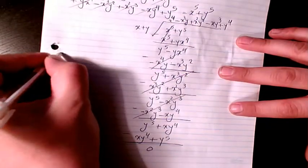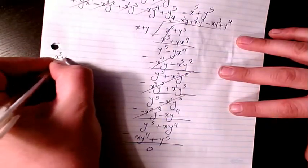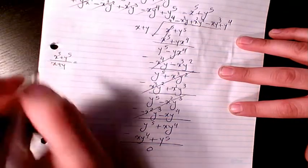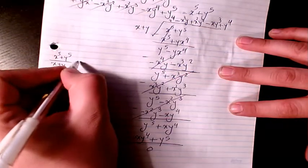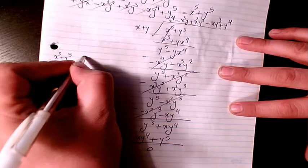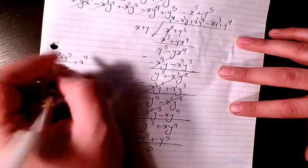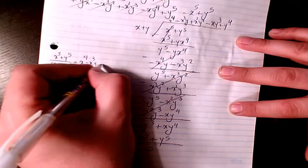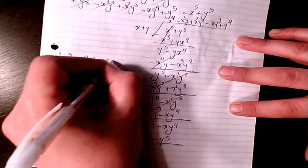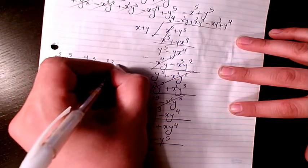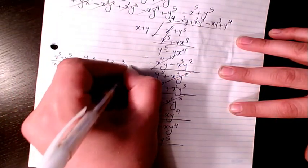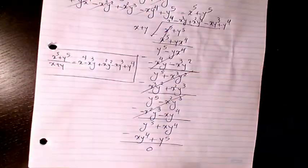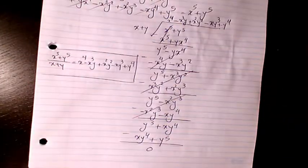So x to the power of 5 plus y to the power of 5 divided by x plus y equals x to the power of 4 minus x cubed y plus x squared y squared minus x y cubed plus y to the power of 4. That will be the final answer.